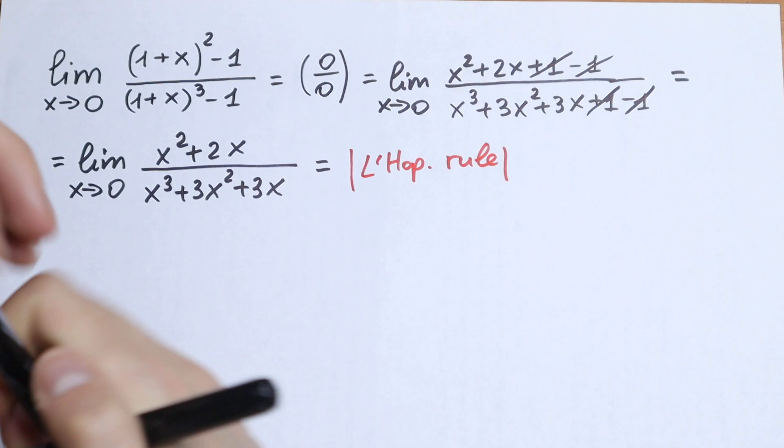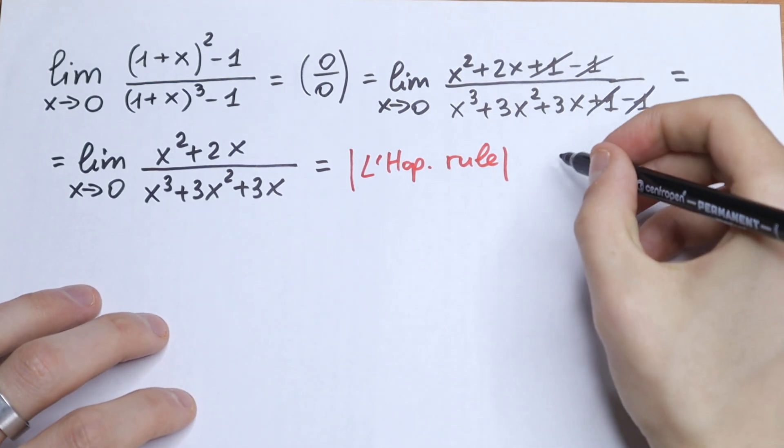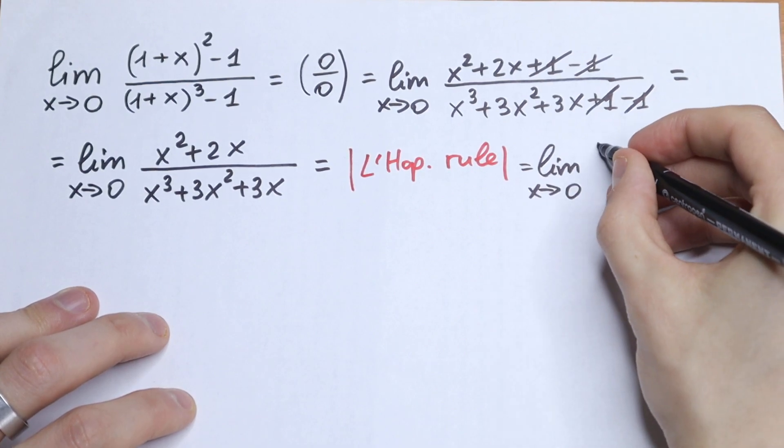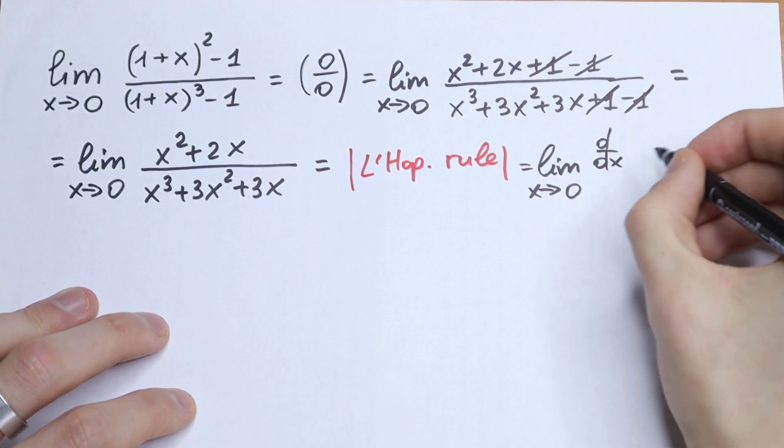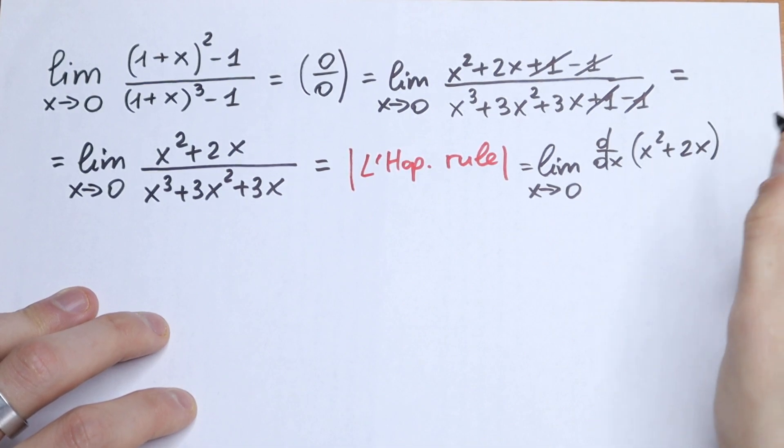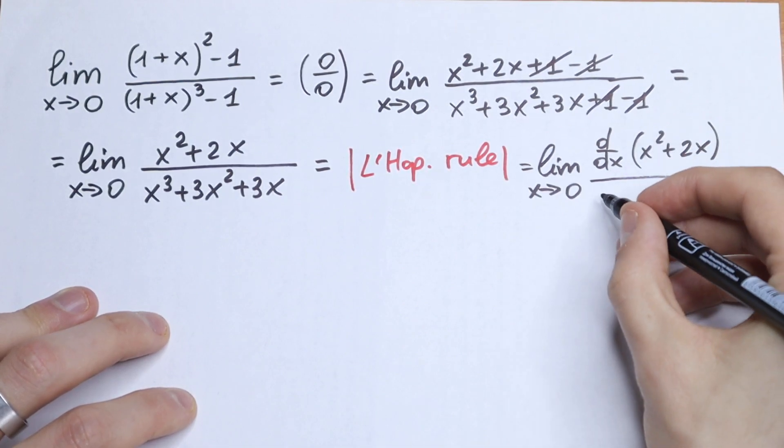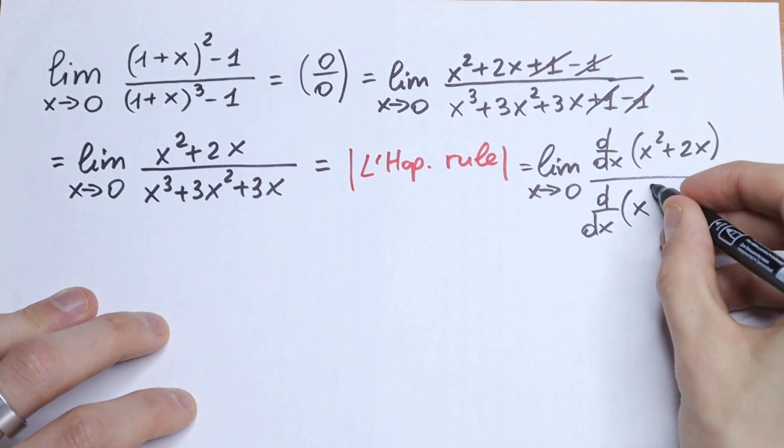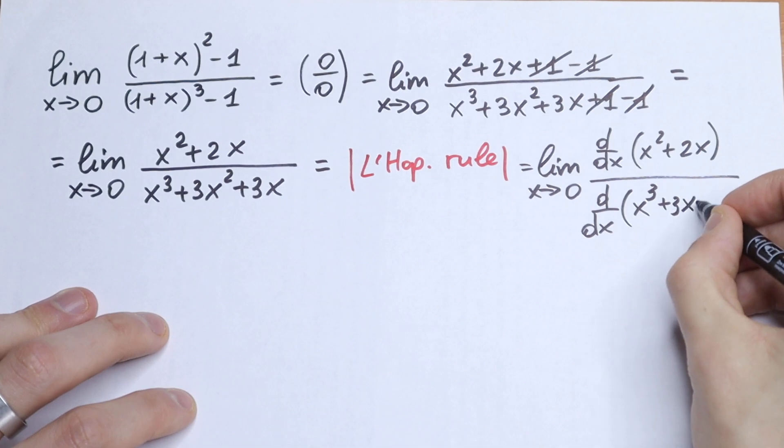We will have that this limit will be equal to the limit as x approaches 0, d/dx of (x² + 2x), so the derivative of our numerator, all over d/dx of our denominator, x³ + 3x² + 3x.